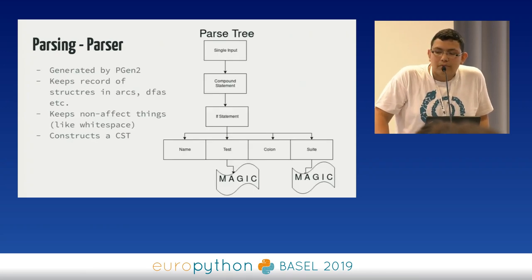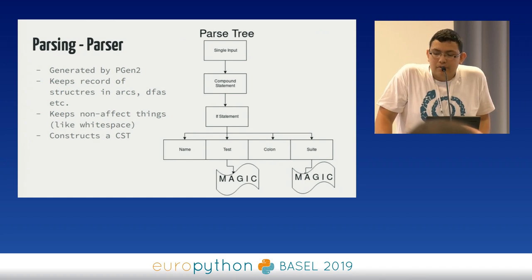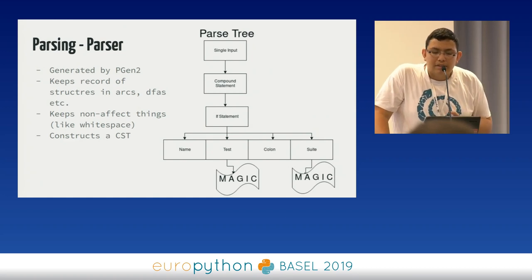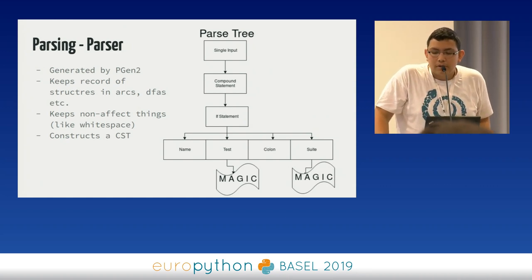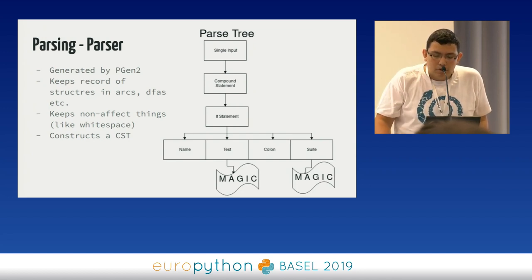Tokens don't know about relationships. They don't know if something is in the if's body or if's test. So we need something more relational, like concrete syntax trees. The parser of Python generates concrete syntax trees from the token stream. You can convert code into a CST and a CST back. The CSTs of two same expressions are different — like you can write two plus two with or without spaces between the operator and integer. So we need something more abstract.